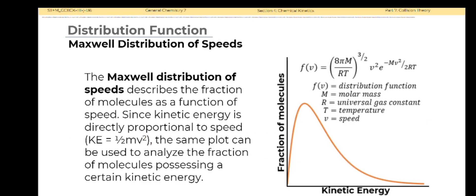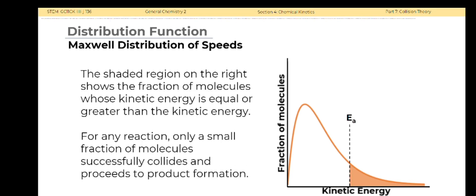The Maxwell distribution of speeds describes the fraction of molecules as a function of speed. Since kinetic energy is directly proportional to speed, KE equals 0.5 mv squared. The same plot can be used to analyze the fraction of molecules possessing a certain kinetic energy. The shaded region on the right shows the fraction of molecules whose kinetic energy is equal or greater than the activation energy. For any reaction, only a small fraction of molecules successfully collides and proceeds to product formation.